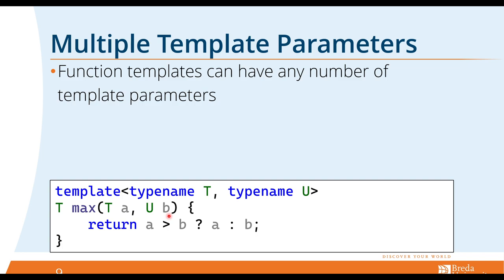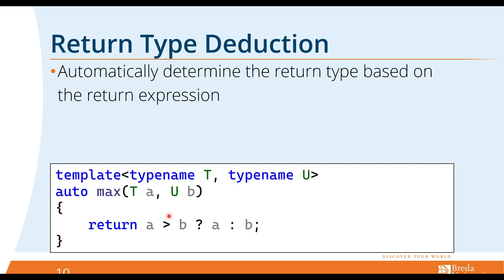The previous issue with mixing function arguments can also be solved by providing more template type parameters. In this case, another template parameter U is defined for the second function argument. Now we can mix different types of parameters and still allow the compiler to deduce the template type arguments. But what about the return type — should it be T or U? If T is a float and U is a double, then this will result in a narrowing conversion when a wider type is converted down to a narrower type.